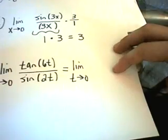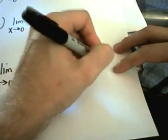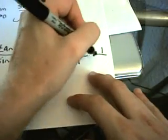I'm going to rewrite this so that I have tangent of six t over one times one over sine of two t. Let me squeeze that in there.